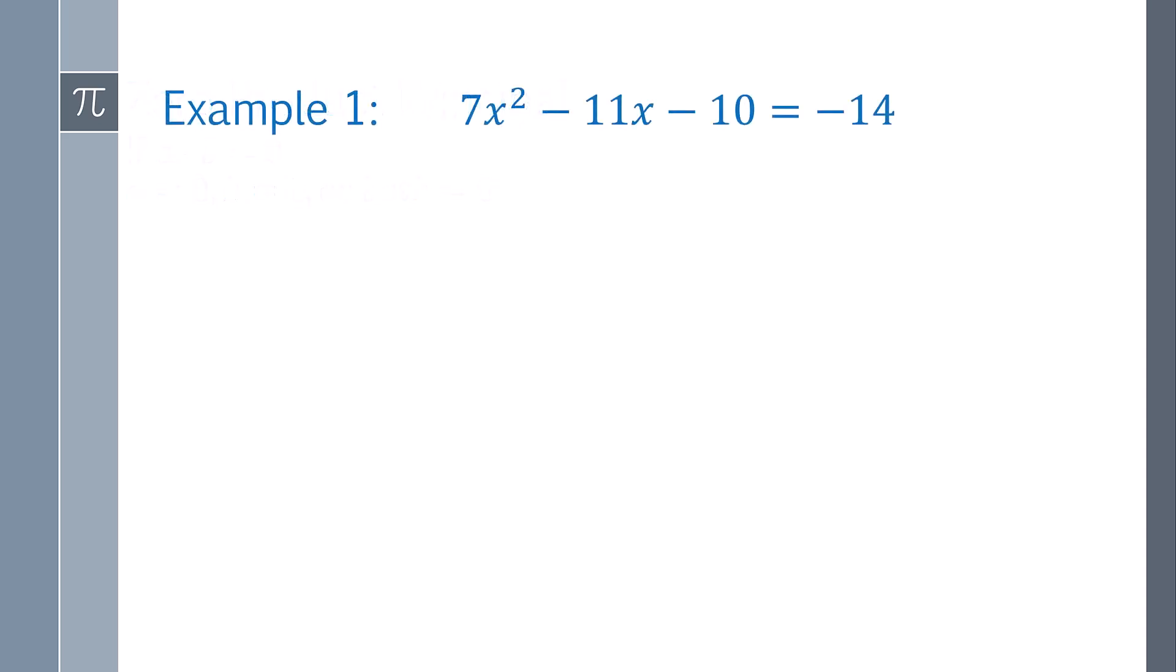So in this equation here, 7x squared minus 11x minus 10 equals negative 14. It's quadratic, so I want it to equal 0. So I'm going to add 14 to both sides.